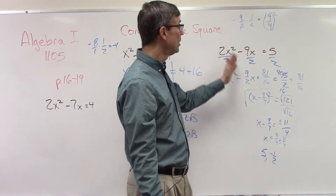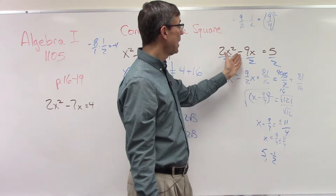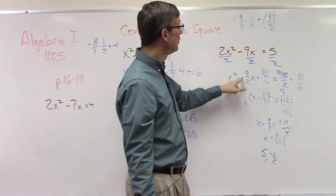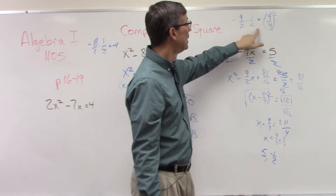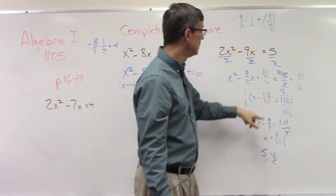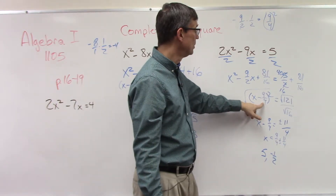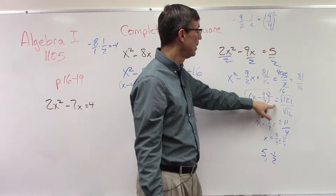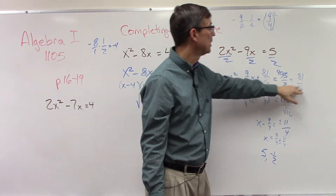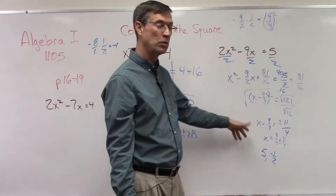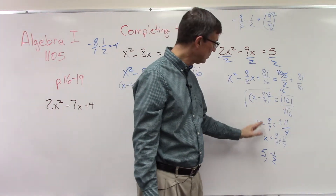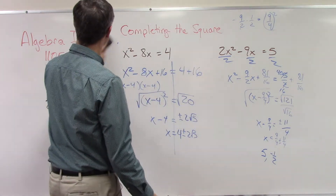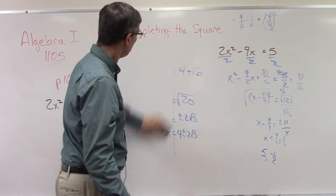To recap: it started complicated but we first divided everything by 2, then took half the middle term, squared it, and added that to both sides. Half the middle term goes in the parentheses: x minus half the middle term, the quantity squared, equals the right side. Then we combined fractions on the right side, took the square root of both sides, and kept solving for x until the very last step.